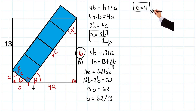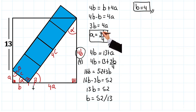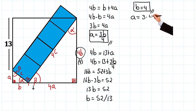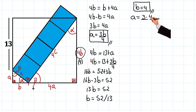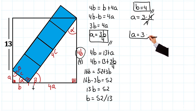Now with this value I can also find a using this equation. We have a = 3b over 4, which is 3 times 4 over 4. Simplifying, the 4s cancel and a is equal to 3. Beautiful, we already have the value of a and b.